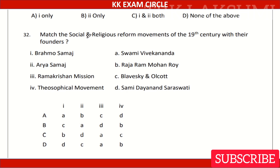Question 2. Match the social and religious reform movements of the 19th century with their founders: Brahmo Samaj, Arya Samaj, Ramakrishna Mission, Theosophical Movement.